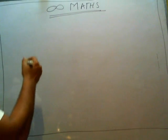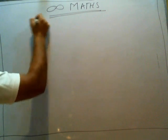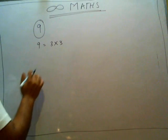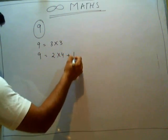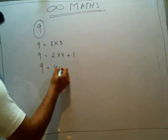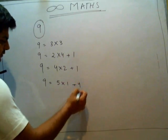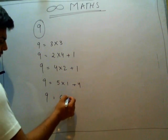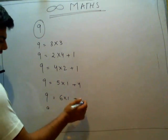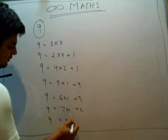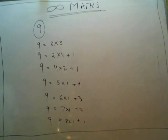You are not aware of it — that's fine. But it does have some value. For example, you can see 9 in many ways. You can see 9 as 3×3. You can see 9 as 2×4+1. You can see 9 as 4×2+1. You can see 9 as 5×1+4, as 6×1+4, as 7×1+2, as 8×1+1. All of these are correct.